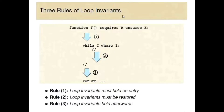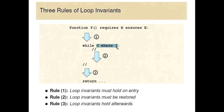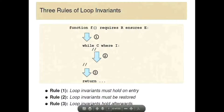So the first one: the loop invariant must hold on entry to the loop — it must hold at this point when we're going into the loop. Rule two: the loop invariant must be restored. That means assuming the loop invariant holds at the beginning of a loop iteration, then after the loop iteration it must still hold. And finally, the loop invariant must hold after the loop. That's basically implied by the other two rules, but it's a key observation.